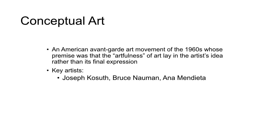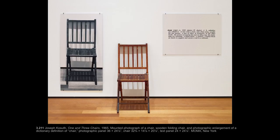Next we come to conceptual art, an American avant-garde movement of the 1960s whose premise was that the artfulness of art lay in the artist's idea rather than its final expression — more about the concept of art rather than the finished product. Key artists include Joseph Kosuth, Bruce Nauman, and Ana Mendieta. Joseph Kosuth was an American conceptual artist inspired by Duchamp's ready-made — an interest in art that appealed to the mind rather than the senses. The artwork titled One and Three Chairs presents three things a chair could be: a photograph of a chair, an actual chair, and the dictionary definition of the word chair.